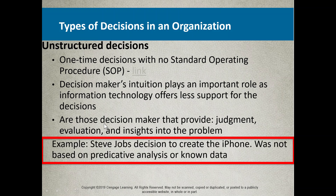Another example is Steve Jobs of Apple. His decision to create the iPhone — when he sat at a board meeting and said 'I've made a decision, I want to create a new product called the iPhone' — is an incredible example of what one unstructured decision can do. It basically launched Apple into one of the largest companies in the world, growing from a couple billion dollars to a trillion-dollar valuation. These unstructured decisions can be at a monumental level, but also at a granular operational level.